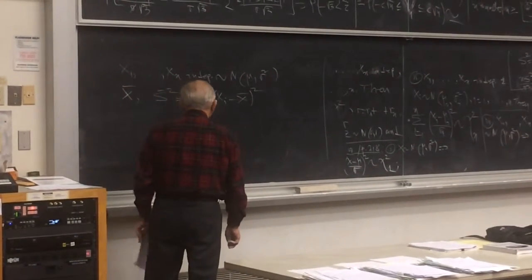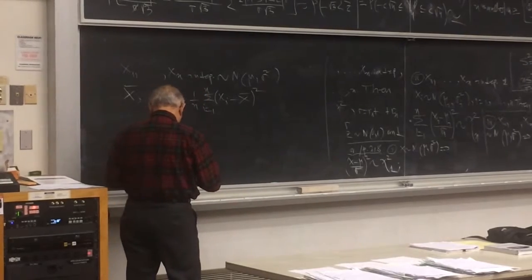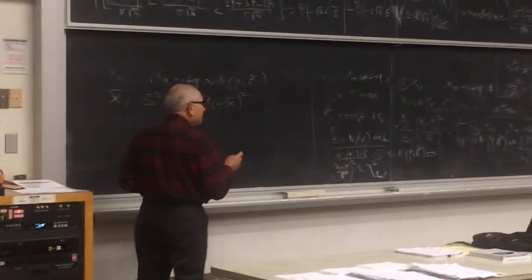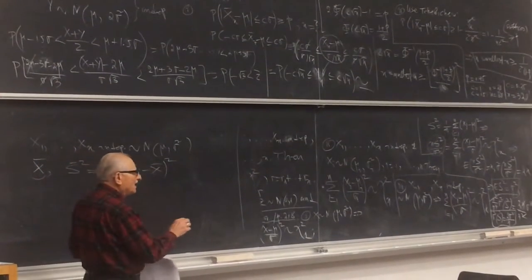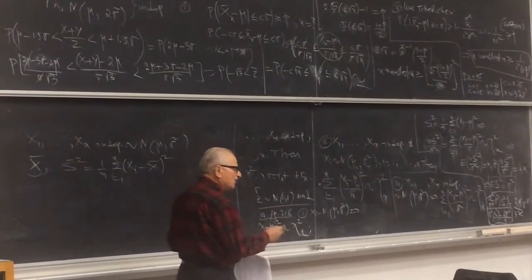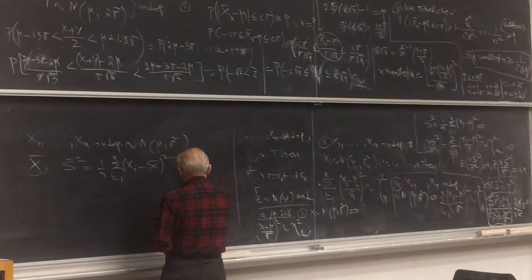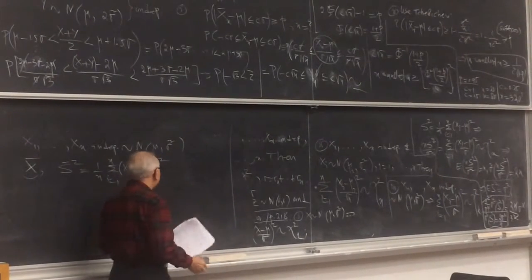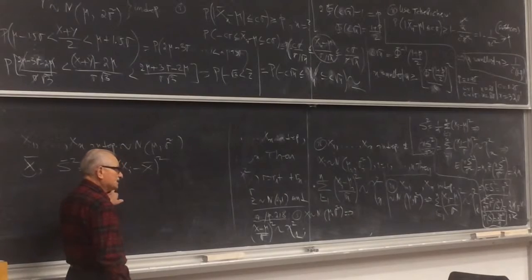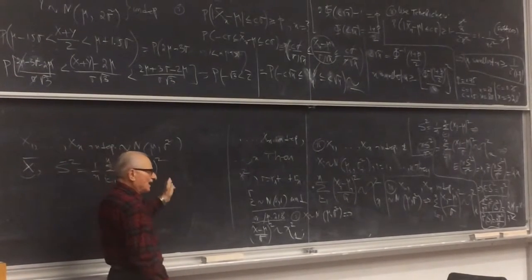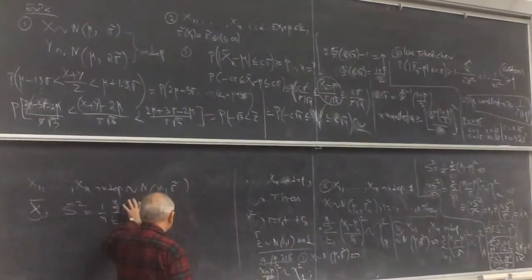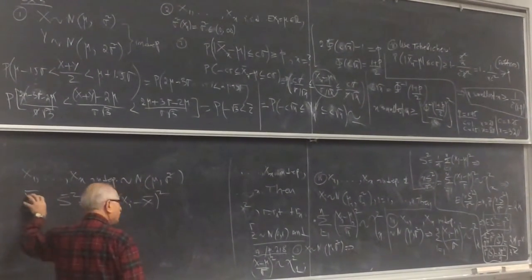Now, the peculiar thing which happens is this. What is x-bar? A function of the x's divided by n. What is this here? It is a function of the x's, and in addition, includes x-bar itself. So you have here something which includes this.